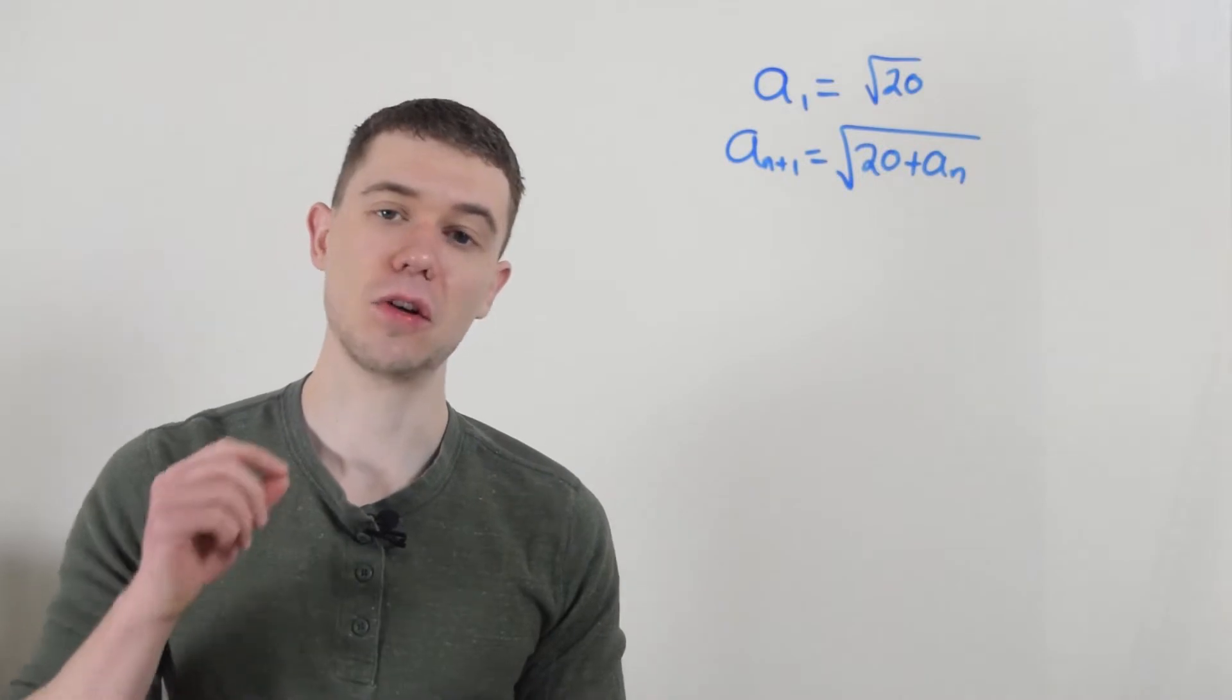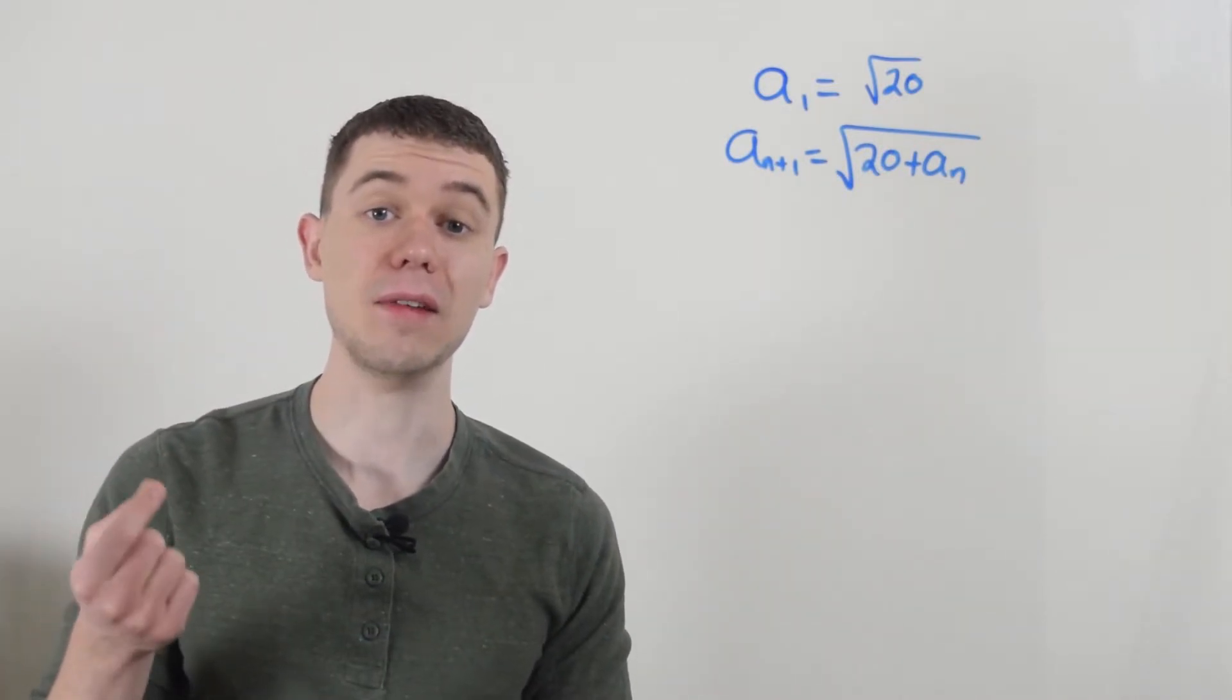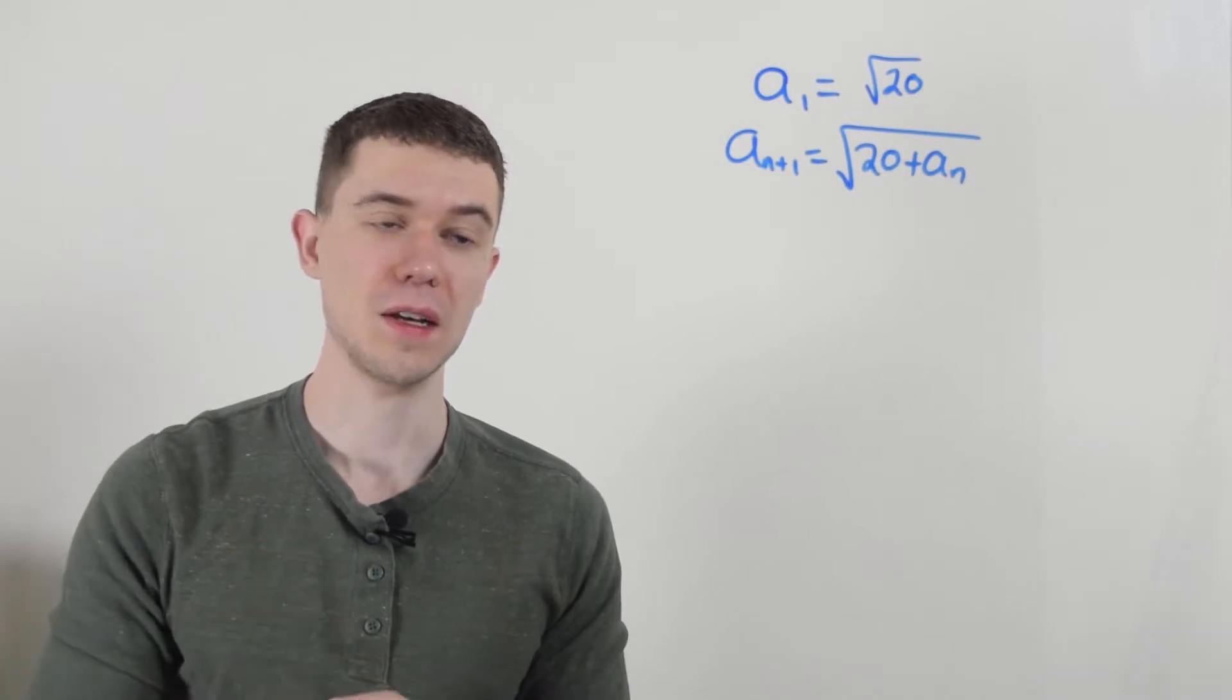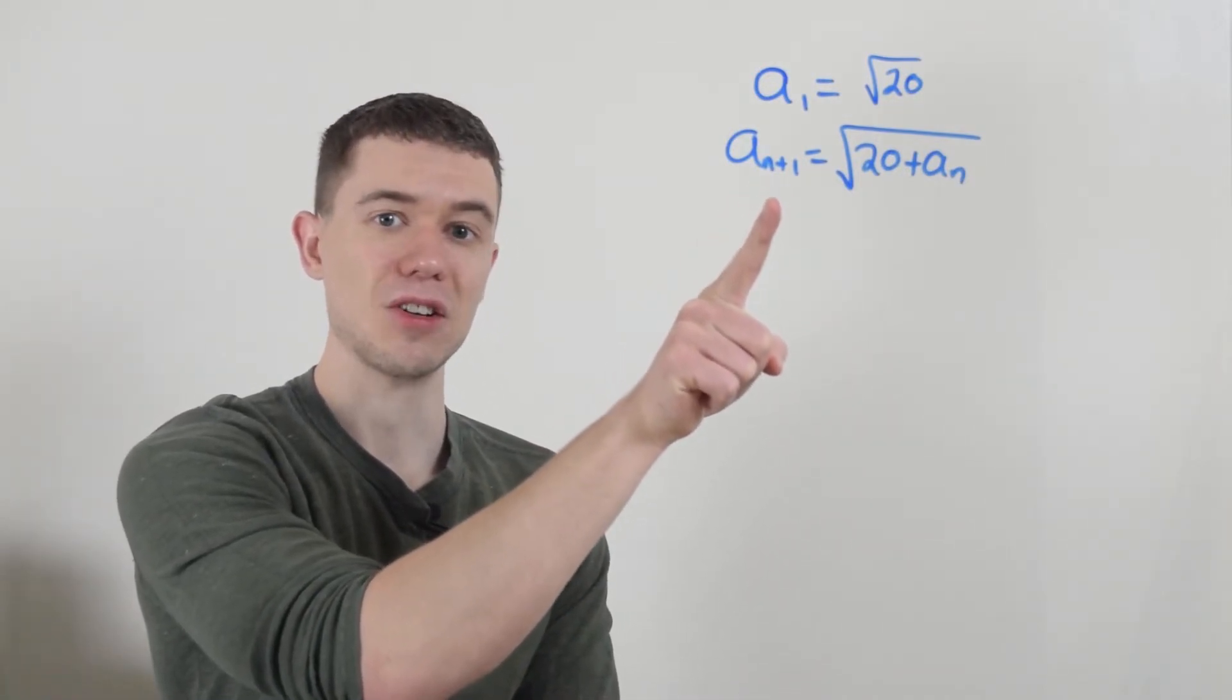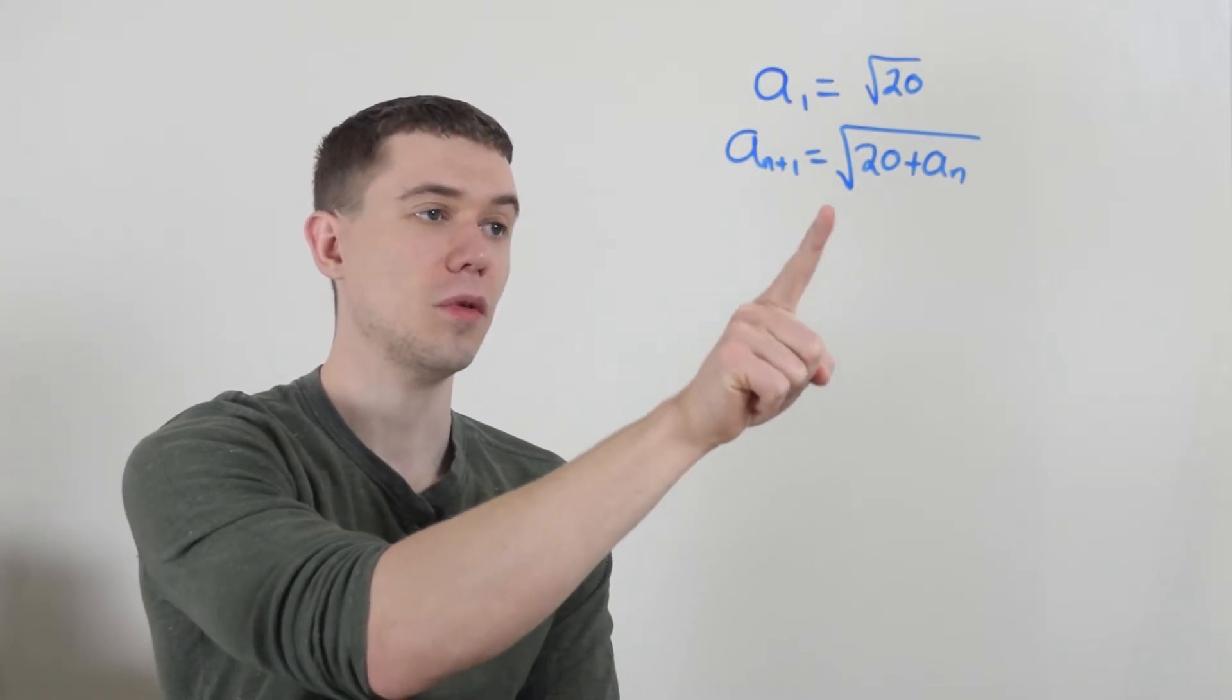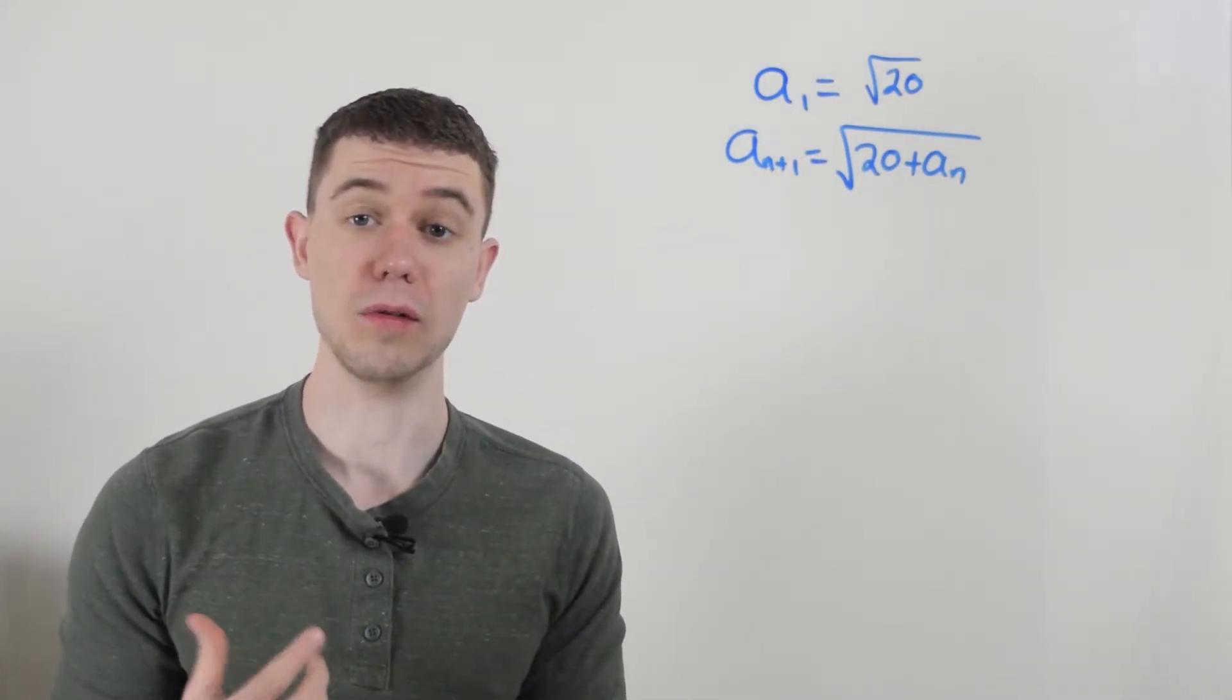So what I've written here, this is called a recursive sequence. It's called that because we can find the next term in the sequence if we have the previous term. So here the n plus 1 term, like the next term in the sequence, is given by square root of 20 plus the previous term. And we're given the first term, the first term being square root of 20.